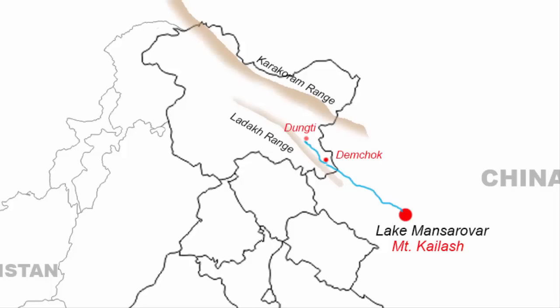At a place called Dungti, the river takes a sharp south-west turn and cuts through the Ladakh range, then takes a north-western course and continues to flow towards the Leh region of Ladakh along the Ladakh range. After reaching Leh, the river continues the north-western course and reaches the town of Batalik, which is in the Kargil district.